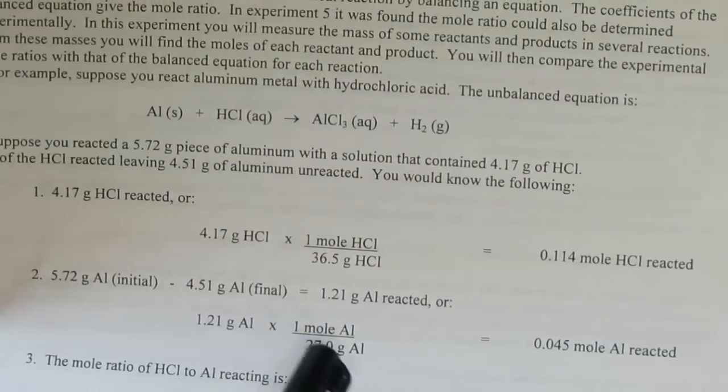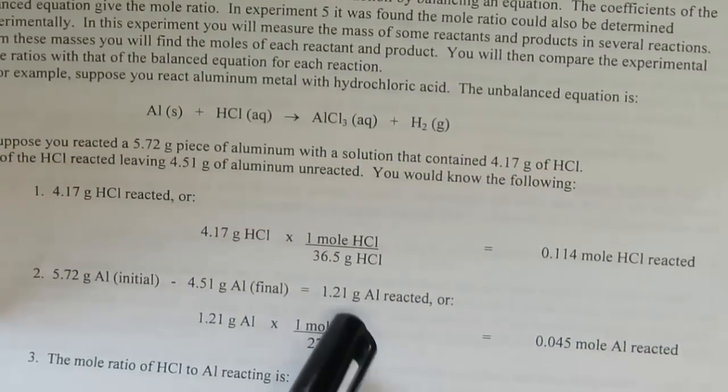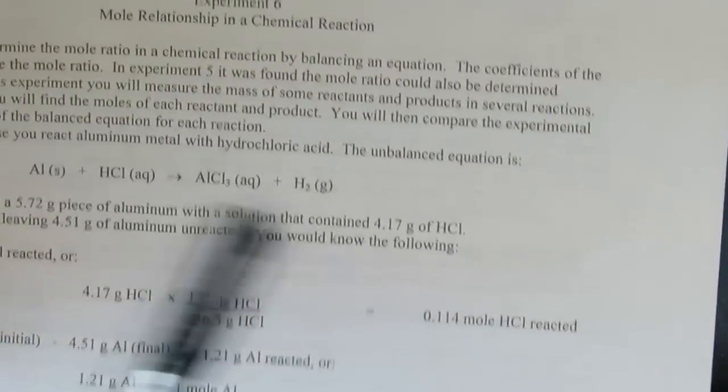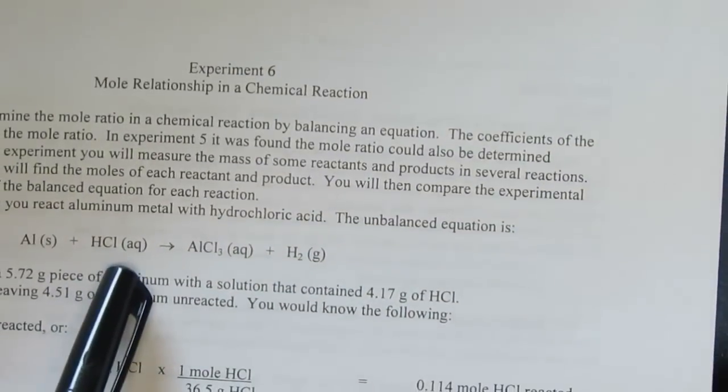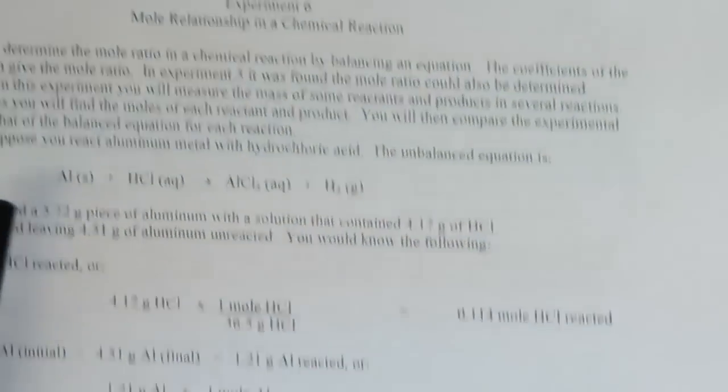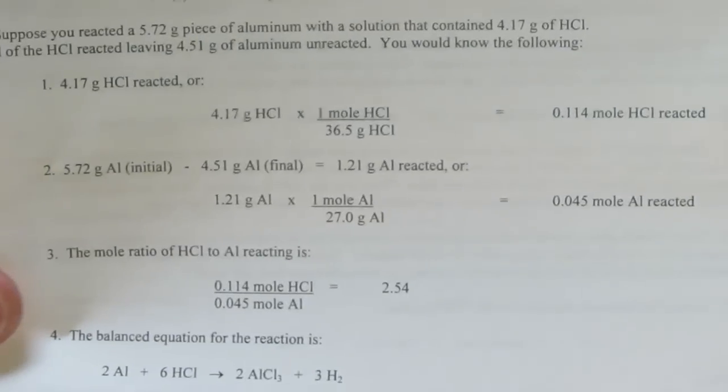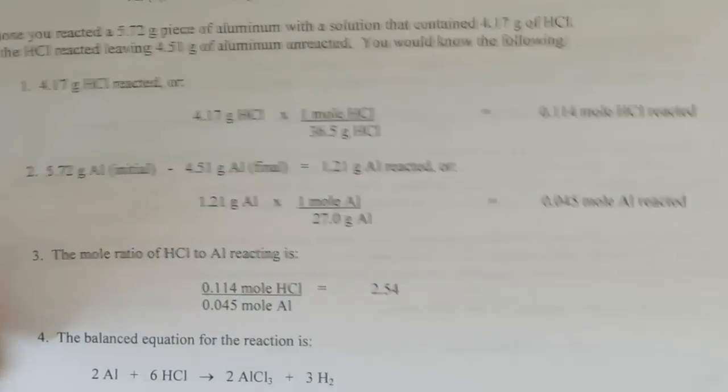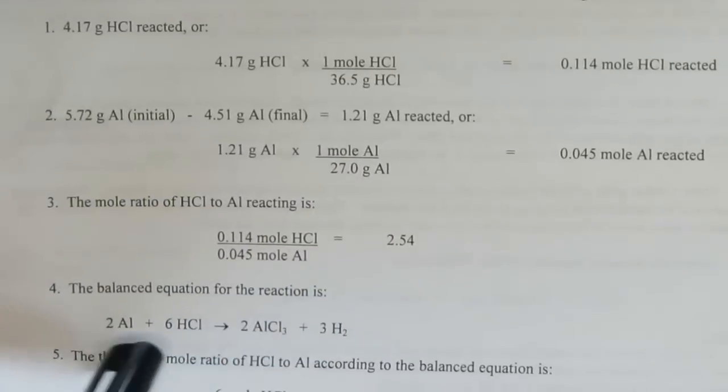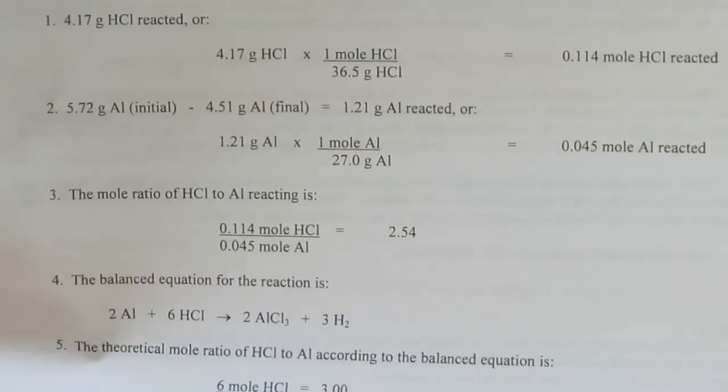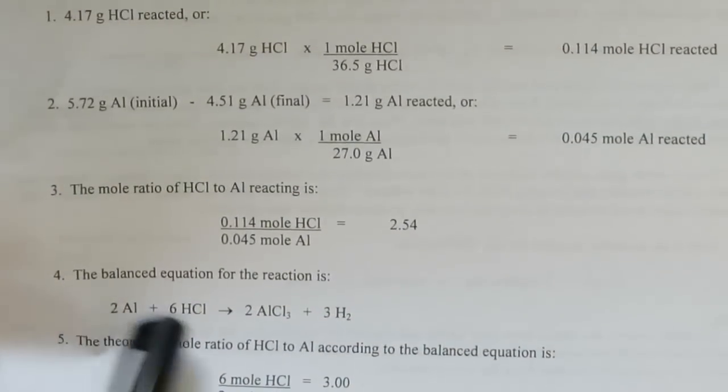I can go from grams by dividing by the atomic mass of aluminum and get into moles. So I have moles of HCl that reacted and moles of aluminum that reacted. I can divide each by the lowest number to get a mole ratio. Now the balanced equation turns out to be a 2 to 6 to 2 to 3 ratio. That means for every 2 aluminums I need 6 HCls.